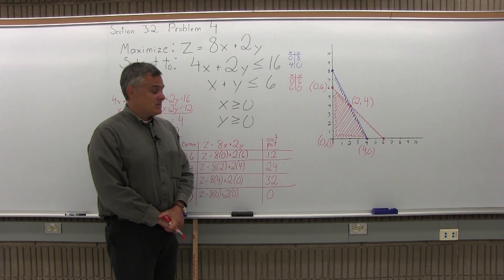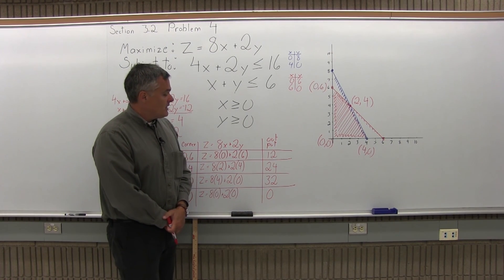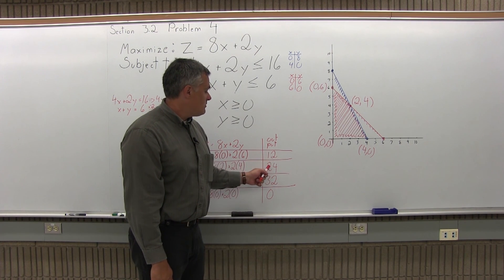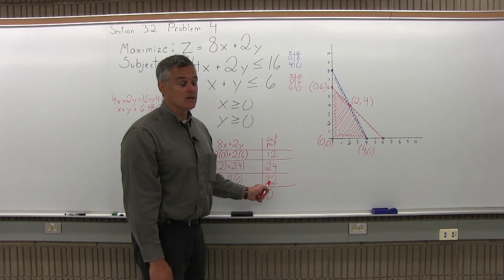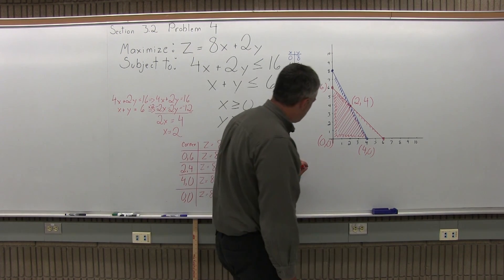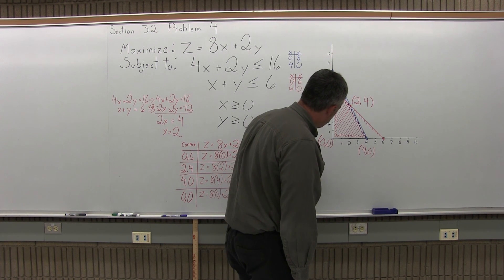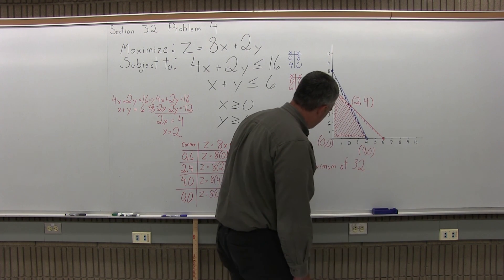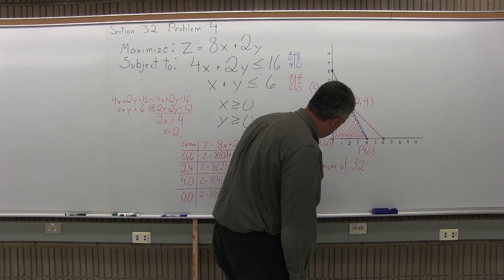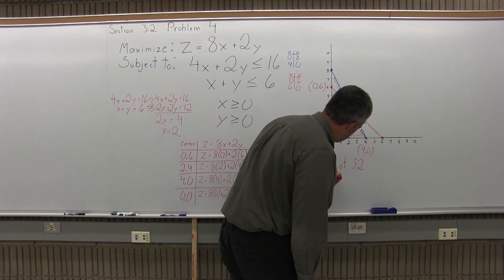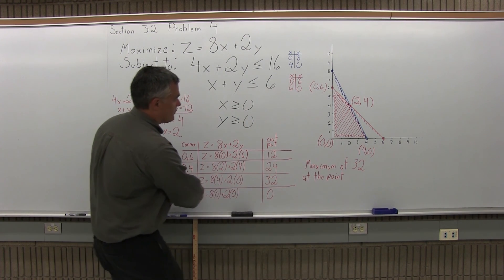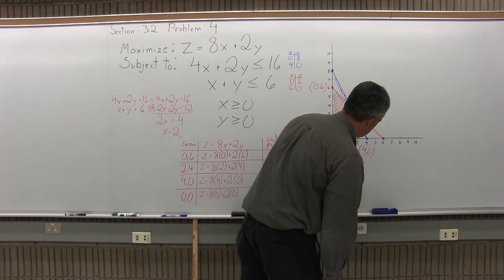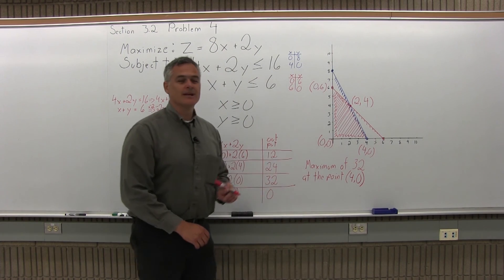Step 3, fill out the chart, is now complete. Step 4 is state your solution. We want to maximize this — our possible outputs are 12, 24, 32, or 0. The biggest output is 32. So the maximum is 32, at the point (4, 0). That's the answer for this one.